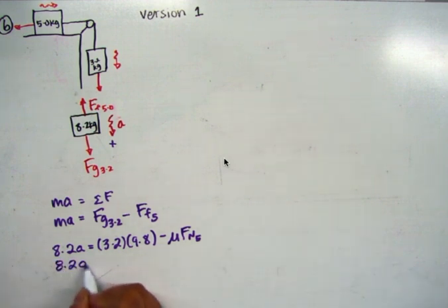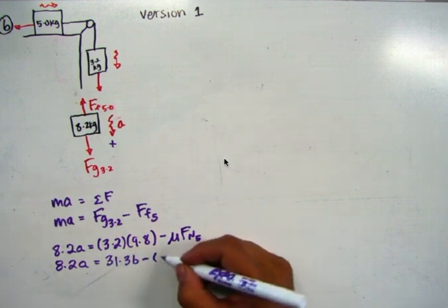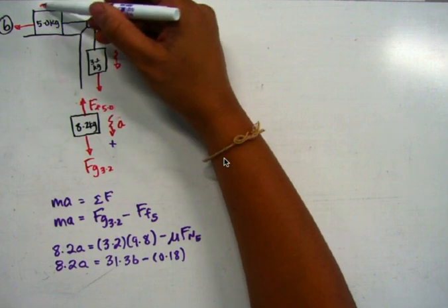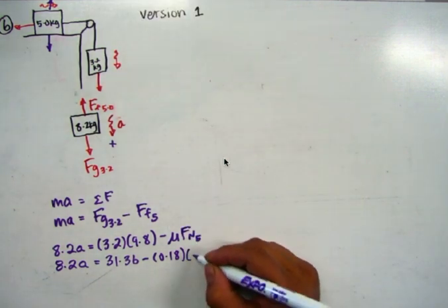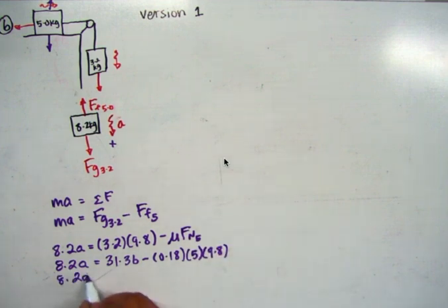Okay, so writing the next line, 8.2A equals, and we can multiply this out, 3.2 times 9.8 is 31.36, minus, now let's plug in what we know. Mu is 0.18 Fn on the 5 kilogram block. What do you think? Well, in this case, the acceleration is horizontal, so the vertical forces are going to be balanced. So this is just going to be mu times M, which is 5, times G, which is 9.8.